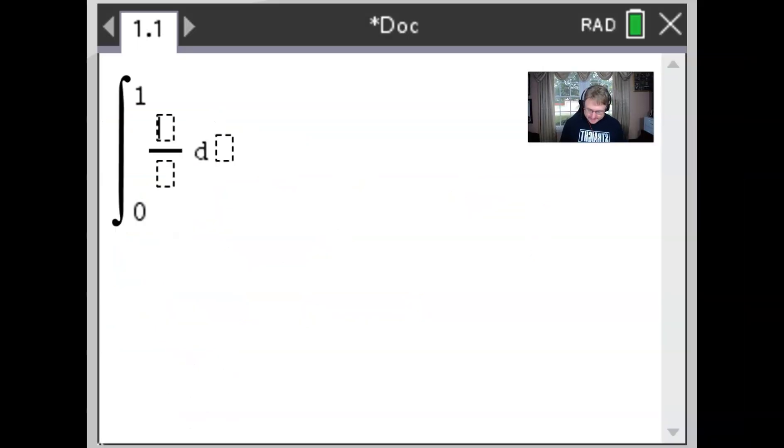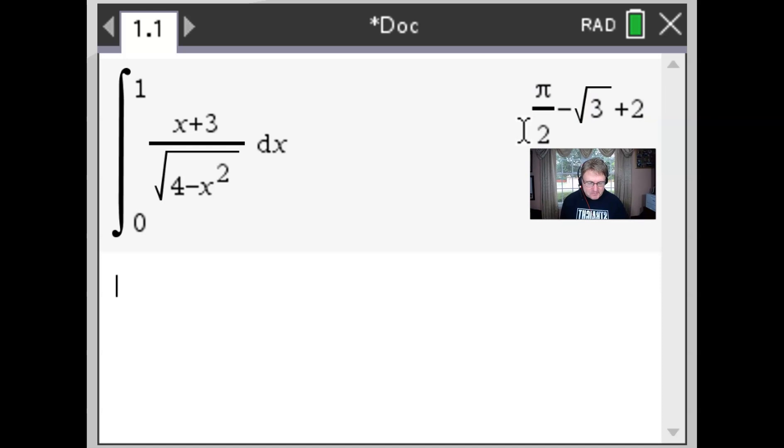So I had placed my definite integral down, now I'm going to put in my numerator, the numerator is x plus 3, and we're going to have the denominator of the square root of 4 minus x squared and let's make sure that we get that square, that'd be nice, with respect to x. Now if I hit enter I'm going to get an answer that's kind of covering up my picture so I'm going to move my picture down